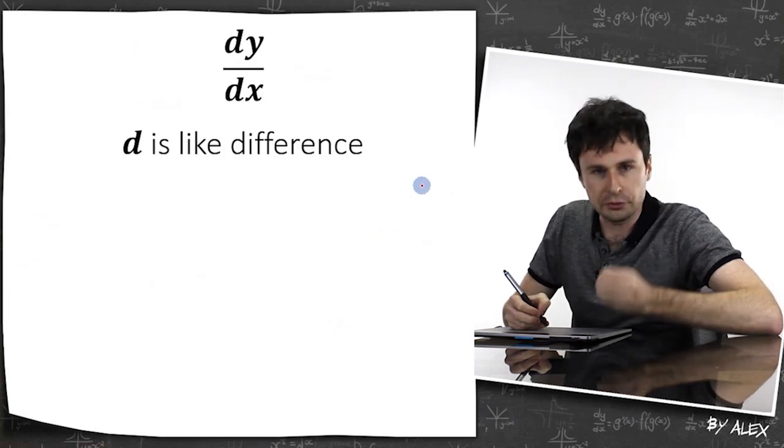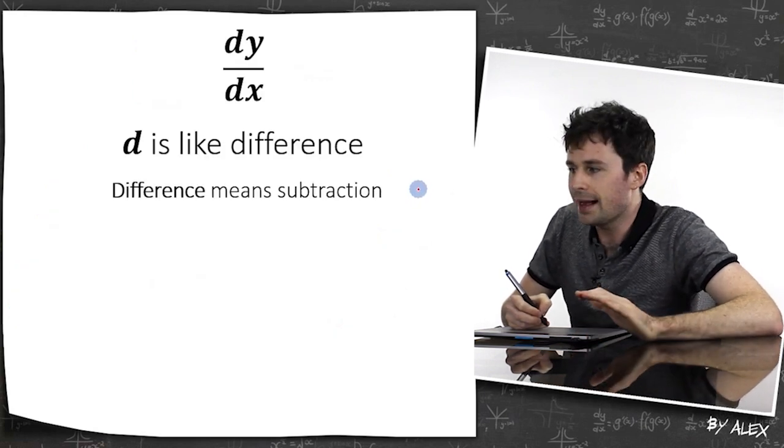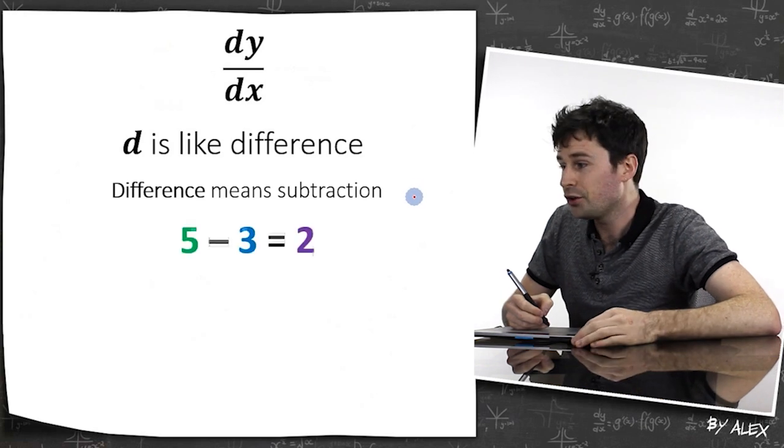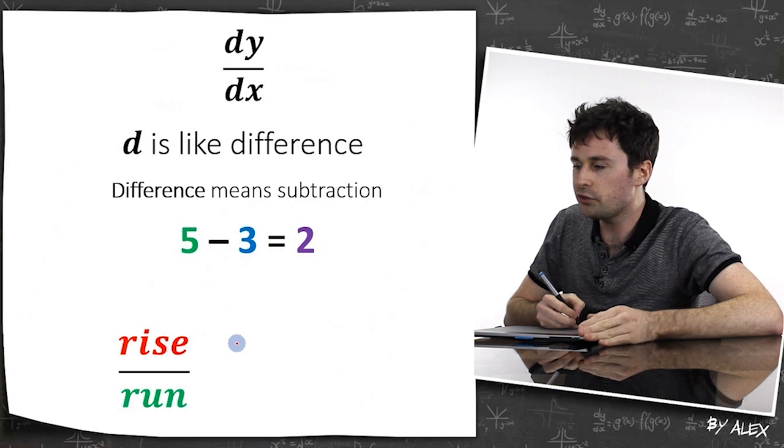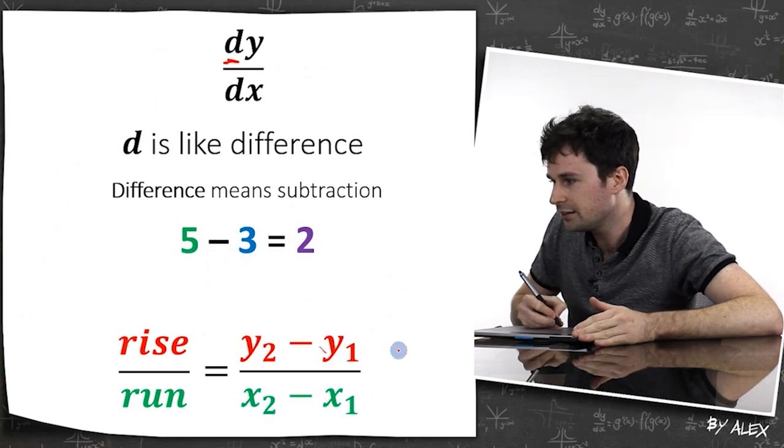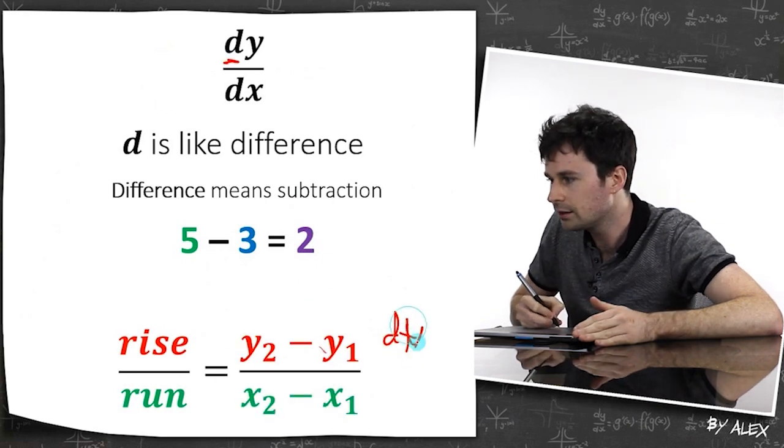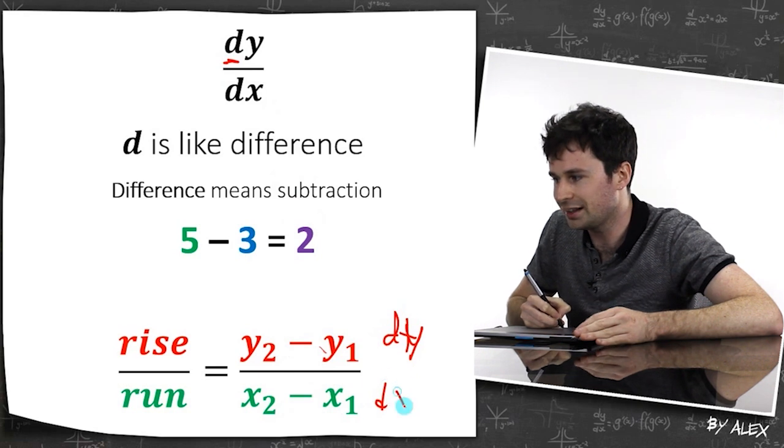d is a bit like the word difference, and difference in maths means subtraction. So the difference of five and three is two. So rise over run is essentially the difference in y, and this is essentially the difference in x.